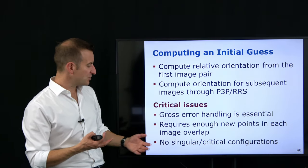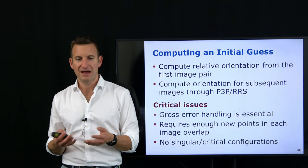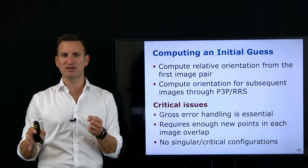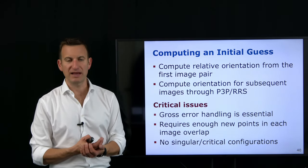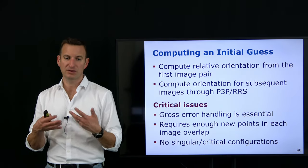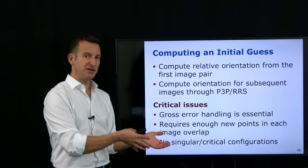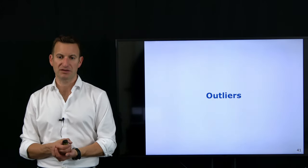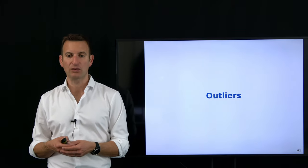Some critical issues: if we have outliers in our pairwise data association, we will get a wrong transformation at some point and our initial guess will not be great. Dealing with outliers or gross errors is a critical factor for getting a good initial guess. The next thing I want to discuss is how to actually deal with outliers.